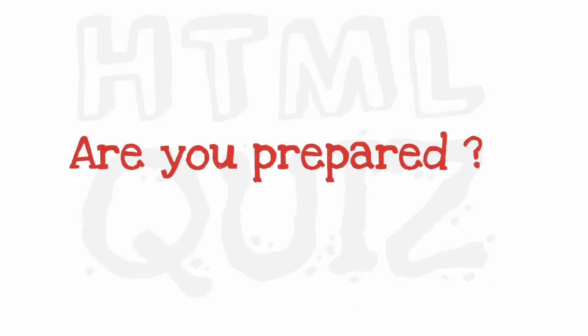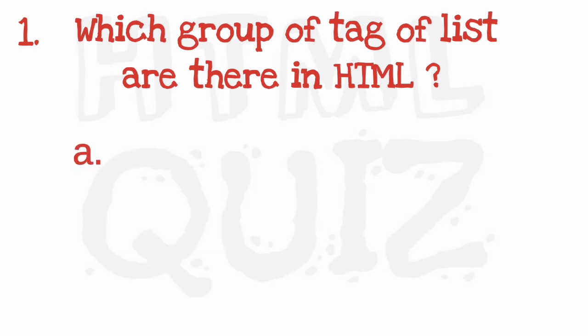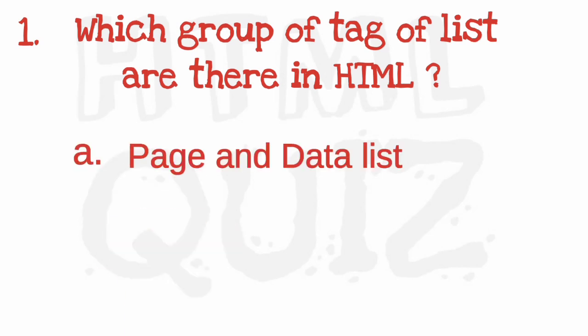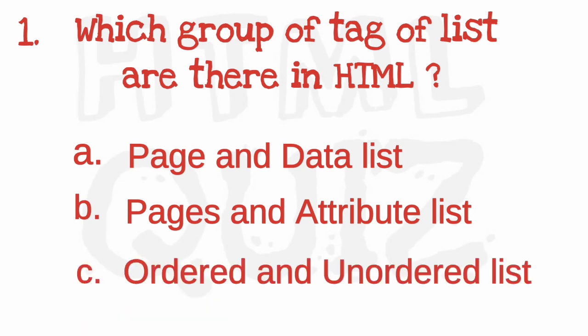Are you prepared? Let's get started. Which group of tag lists are there in HTML? You have five seconds to answer each question. The right answer is ordered and unordered lists.